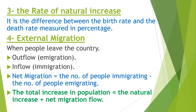The rate of natural increase is the difference between the birth rate and the death rate, measured in percentage. Number four is external migration. We calculate net migration by the difference between the number of people immigrating and the number of people emigrating. The total increase in population equals the natural increase — the difference between births and deaths — plus the net migration flow.